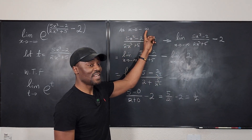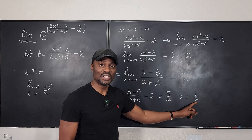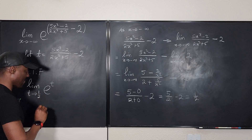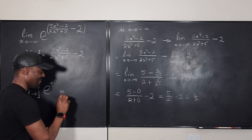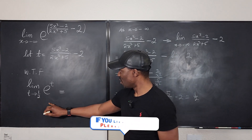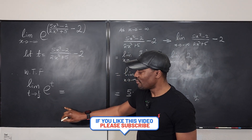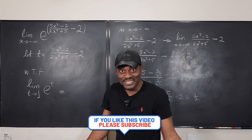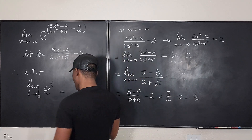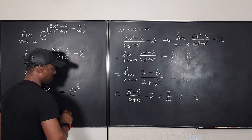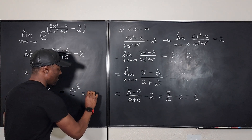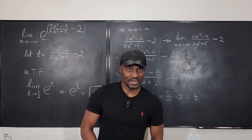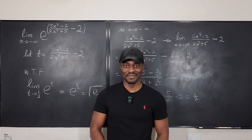So as x goes to negative infinity, t is approaching 1/2, and that 1/2 is what we bring back. So t is going to 1/2. Remember, if you can plug in the limit value into your function, that's your limit — you don't need to do any more math. So the answer is e to the 1/2, or the square root of e. Never stop learning — those who stop learning have stopped living. Bye-bye!